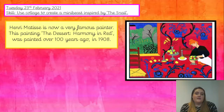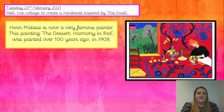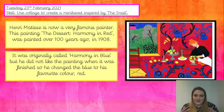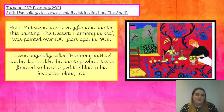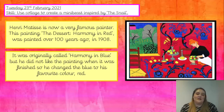This painting is called The Dessert: Harmony in Red and it was painted over a hundred years ago in 1908. Have a look at what details you can see — what's the lady doing, where might she be? Pause the video and discuss this painting. Originally this painting was called Harmony in Blue, but he didn't like it when finished, so he changed the blue to his favourite colour: red. Imagine what it would have looked like in blue — which would you have preferred? Pause the video and discuss.